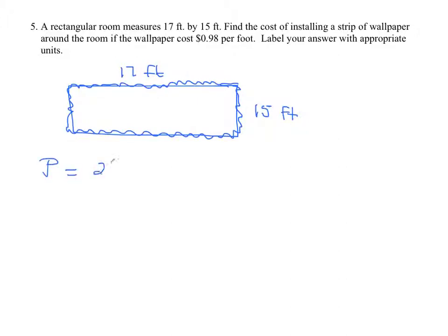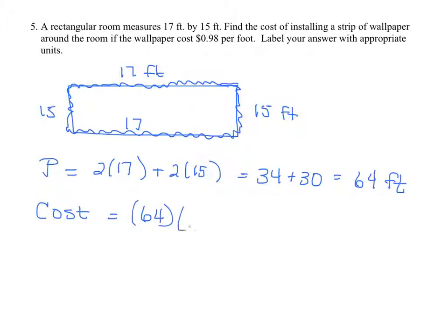which will be two 17s, right? So that would be 64 feet around the object. And then to get the cost, we're going to have to multiply 64 feet times 0.98 because that's the cost per foot. So the result is $62.72.